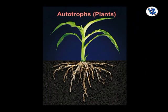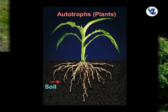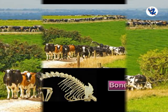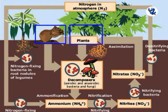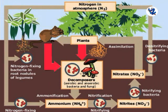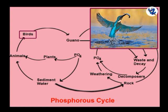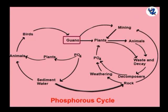Autotrophs (plants) take up phosphorus in the form of phosphate through their roots from the soil. Animals obtain phosphorus from plants and need large quantities to make bones, teeth, and shells. When animals or plants die, phosphate may be returned to the soil or water by decomposers. The mining of phosphate and its use as fertilizer greatly accelerates the phosphorus cycle. Marine birds play a unique role — they eat marine fishes rich in phosphorus, and their excreta called guano deposits contain high levels of phosphorus, returning it from the ocean to the land.